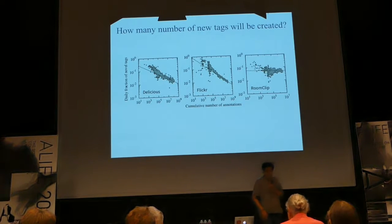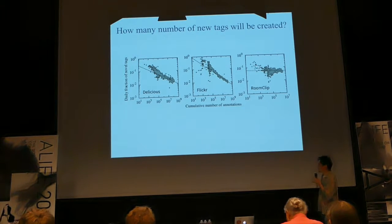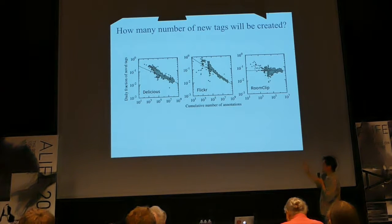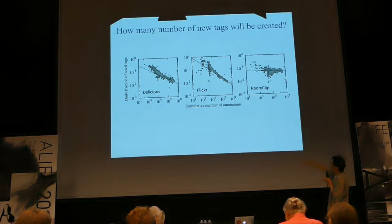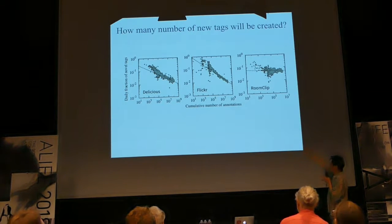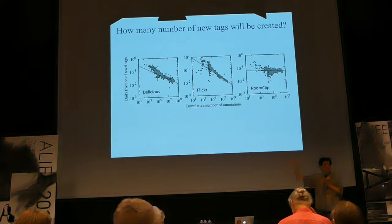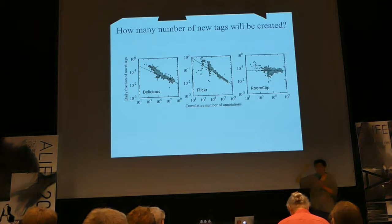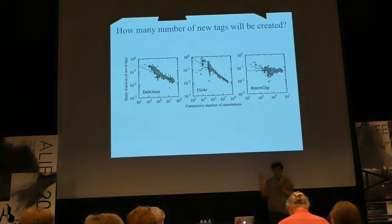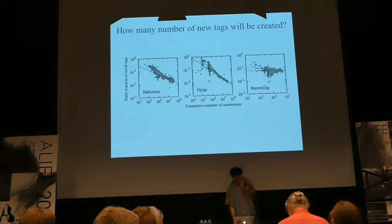We looked into not only this, but compared with different social network services like Delicious, Flickr, and Roomclips — how novel new tags are submitted with photos. Apparently, looking at the daily fluctuation of tags, with the horizontal axis as the cumulative number of annotations, the novelty is unfortunately decreasing. The number of users is increasing, but the novelty — in terms of new tags created per day — is decreasing.